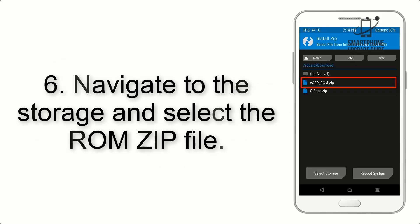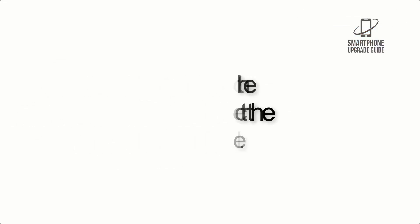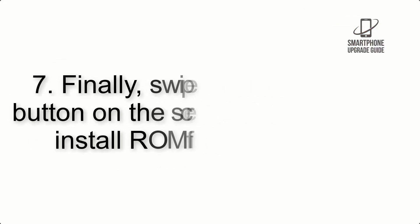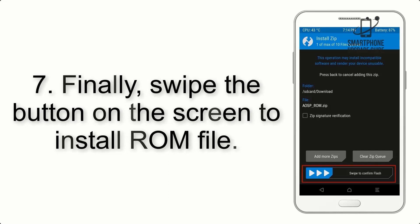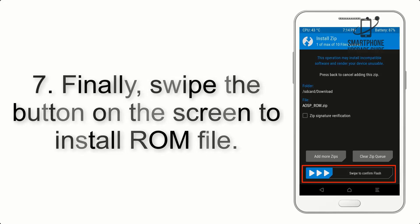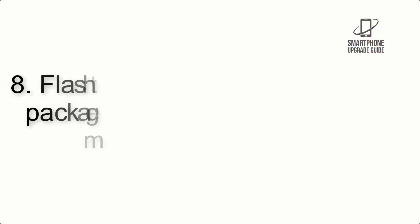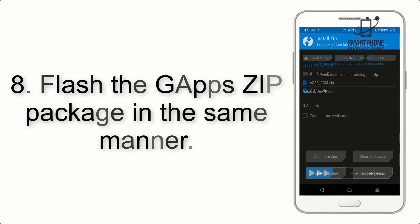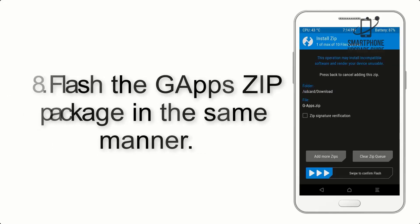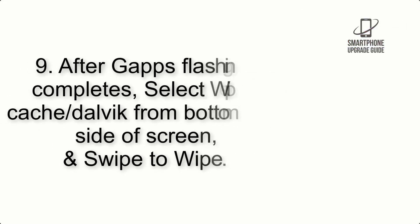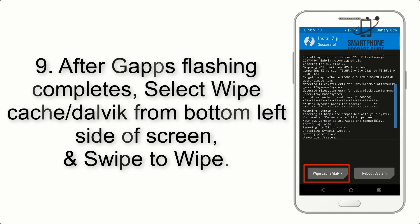Step 5: Go back to the recovery main screen and tap on the Install button. Step 6: Navigate to the storage and select the ROM zip file. Step 7: Finally, swipe the button on the screen to install the ROM file. Step 8: Flash the GApps zip package in the same manner.